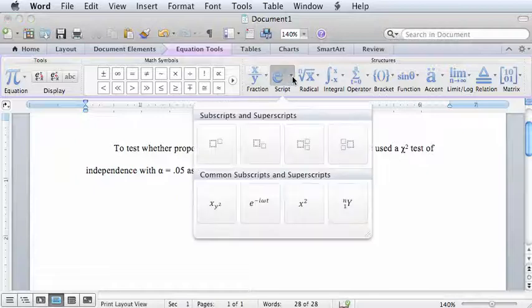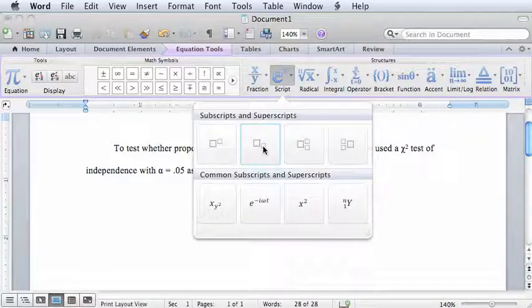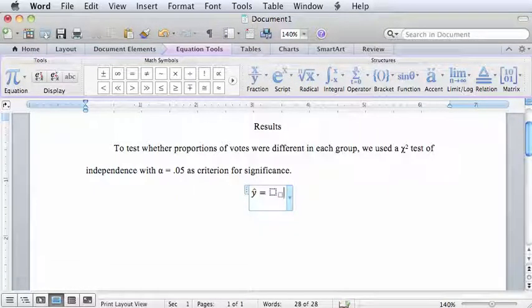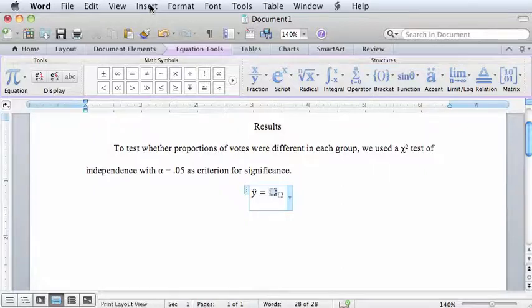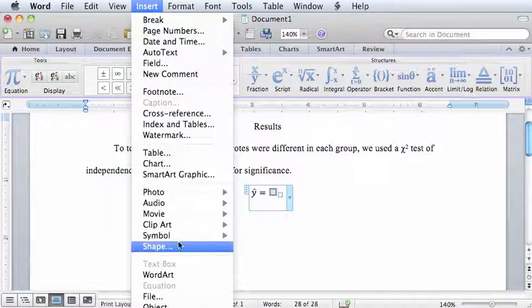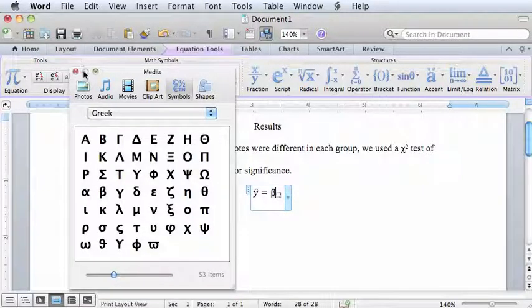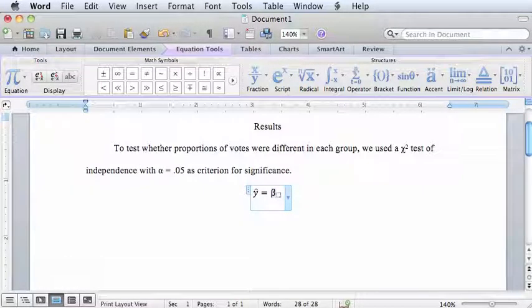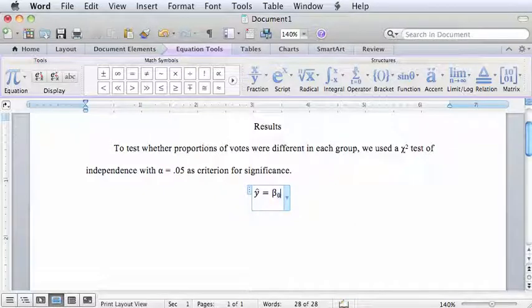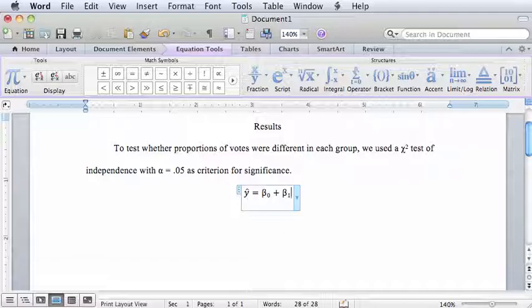The Script tool is an alternative way to make a subscript, and it is especially helpful when you need to attach a subscript and a superscript to the same symbol, which we will see later in this video. You will notice that when using the equation editor, letters and other symbols are automatically spaced appropriately, so there is no need to manually type spaces.